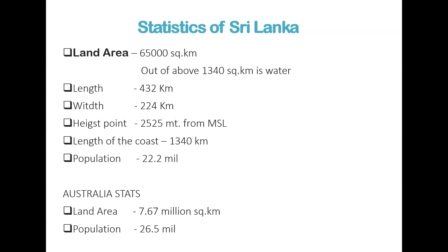Out of that, 1,340 square kilometers is water. The length is only 432 kilometers, width only 224 kilometers. The highest point is 2,525 meters from MSL. The coastline is 1,340 kilometers. Population is 22.2 million. By comparison, Australia is 7.67 million square kilometers with a population of 26 million — so you can see the density difference between the two countries.